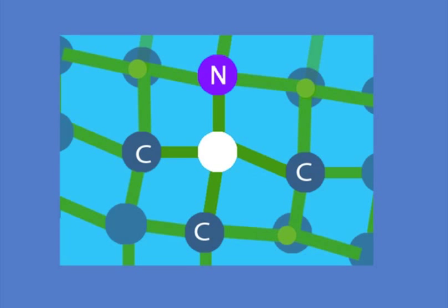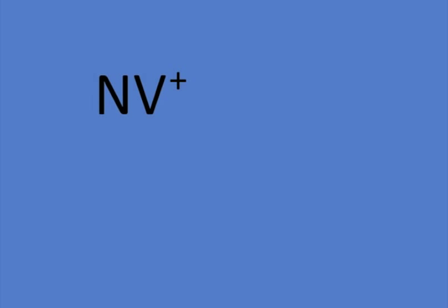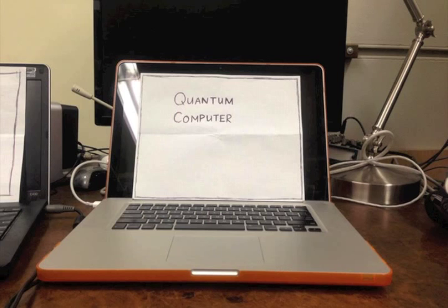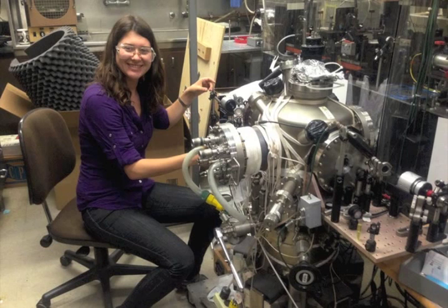NV centers come in three flavors: positively, neutrally, and negatively charged. The negatively charged NV centers are now being used in many different fields, like biology, quantum computing, and fundamental atomic research.